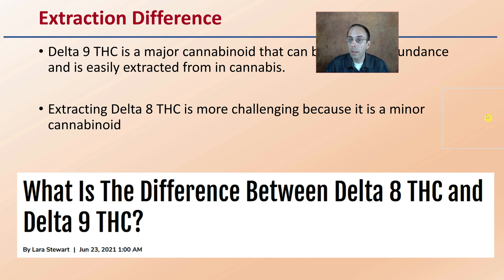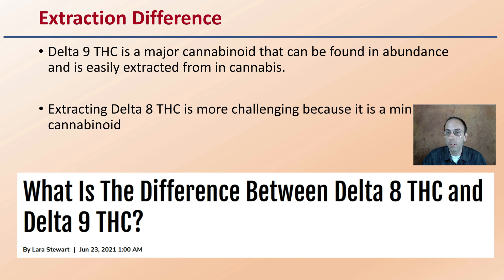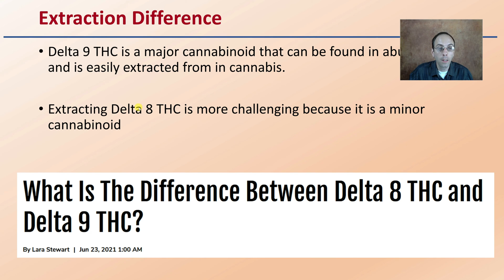Looking at the extraction difference: Delta-9 THC is a major cannabinoid that can be found in abundance and is easily extracted from cannabis. In comparison, extracting Delta-8 THC is more challenging simply because it is a minor cannabinoid — it's less concentrated in the plant, so it's a little bit harder to extract.